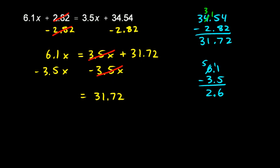and I have a decimal point right there. So, 6.1 minus 3.5 is 2.6. That means that 6.1x minus 3.5x is 2.6x. So, now my problem says this: 2.6x equals 31.72.